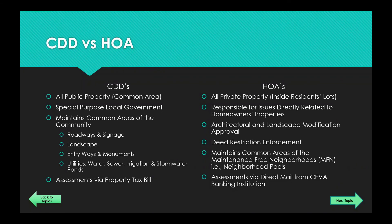The assessments for district services you receive as a homeowner are sent through the property tax bill on an annual basis, around October-November. On the HOA side, the HOA's jurisdiction covers private property — inside your property boundaries — dealing with architectural and landscape modifications and deed restrictions to make sure neighbors are keeping everything looking aesthetically pleasing. There are also some maintenance-free neighborhoods, and those neighborhood pools are governed by the HOA through the MFN.